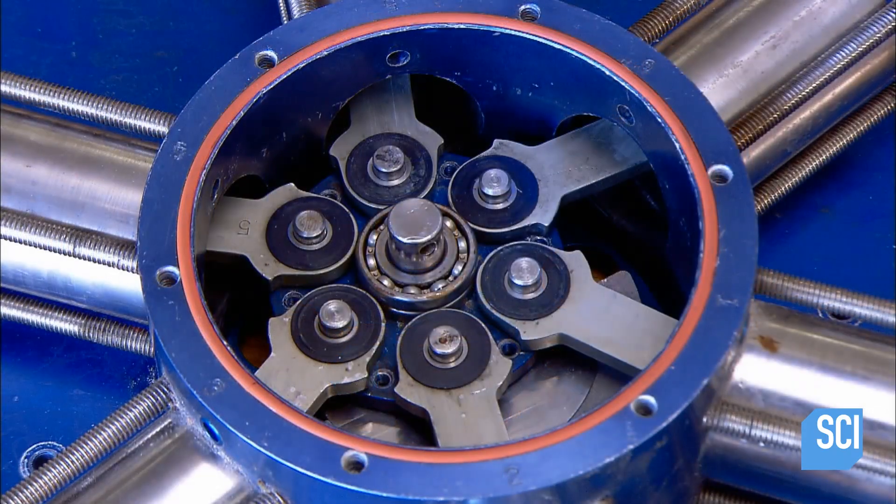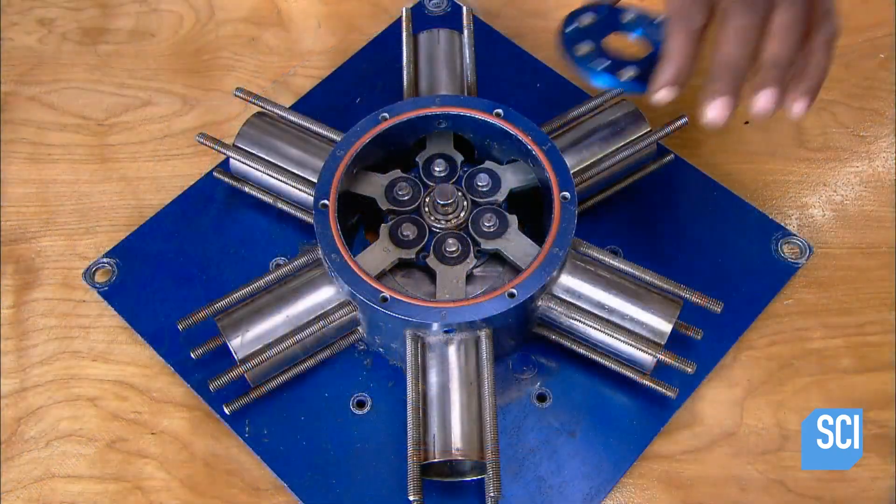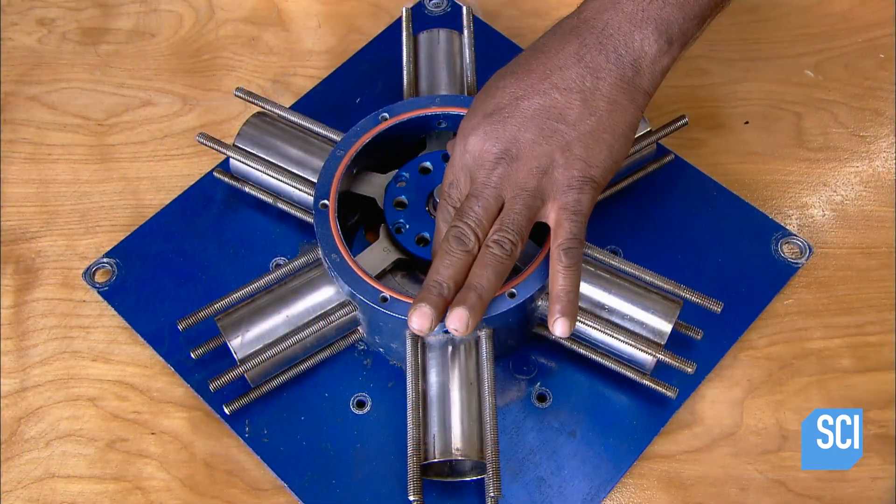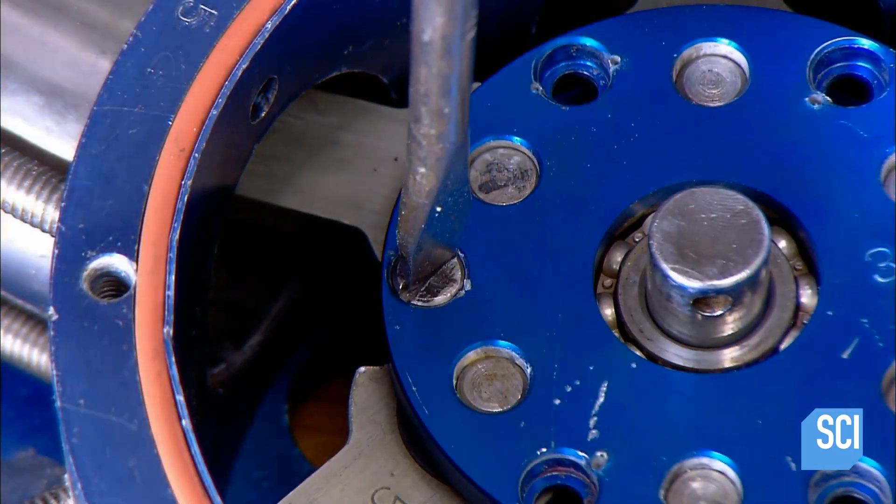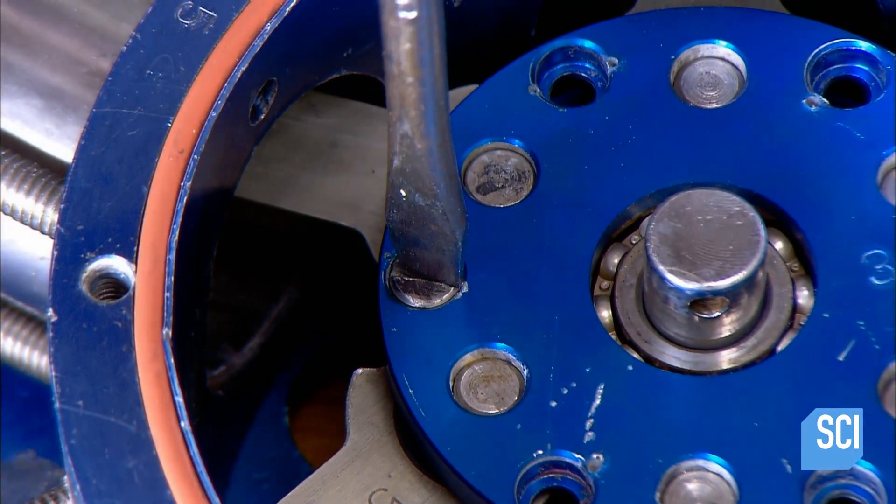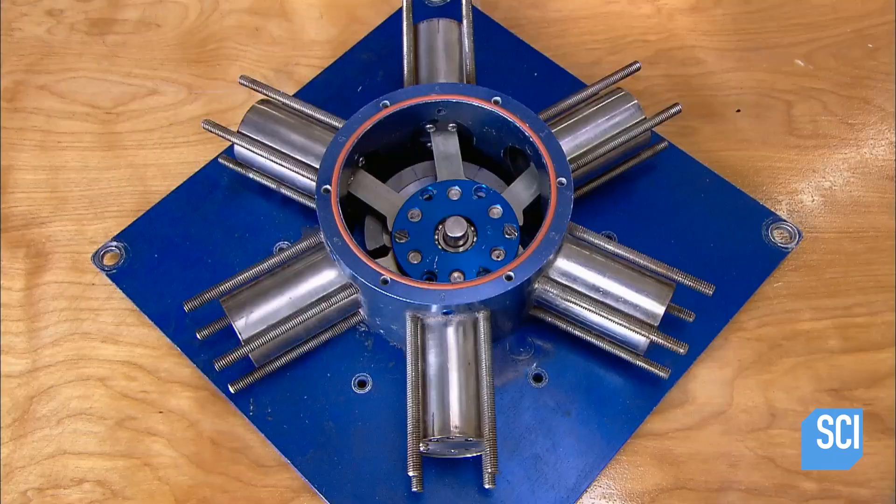They connect the piston rods to the crankshaft in the center with a specially designed component called a spider bearing. This bearing is designed to modify the piston stroke, producing a smoother rotation of the crankshaft and more power to the engine.